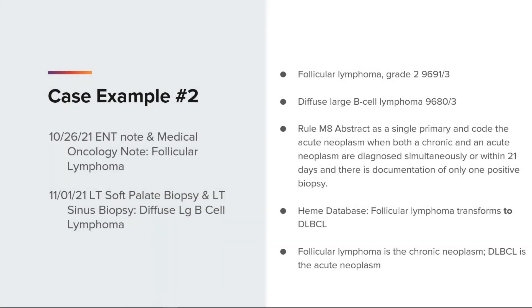In this case we saw follicular lymphoma and diffuse large B-cell lymphoma. If we skipped the multiple primary rules in the heme manual and went straight to the heme calculator, the result would tell us to abstract a new primary for the diffuse large B-cell. However, going to the heme database and then applying the rules are the correct steps. The heme database tells us follicular lymphoma is a chronic neoplasm while diffuse large B-cell lymphoma is an acute neoplasm. Both neoplasms are within 21 days of each other with documentation on only one positive biopsy, so rule M8 applies. Rule M8 note 1 says that when these diagnoses happen within 21 days, it is most likely that one diagnosis was provisional and the biopsy identified the correct diagnosis, so we would abstract the acute neoplasm.